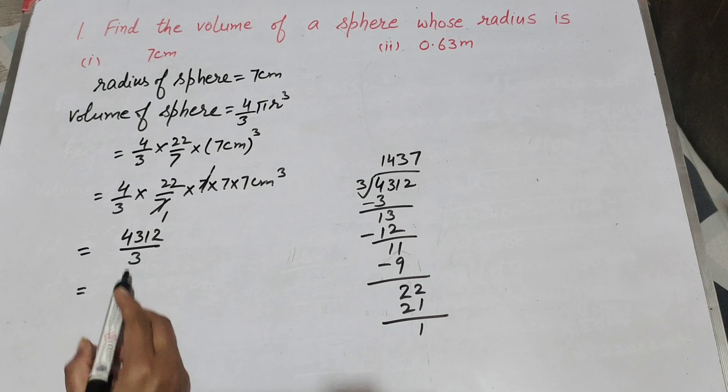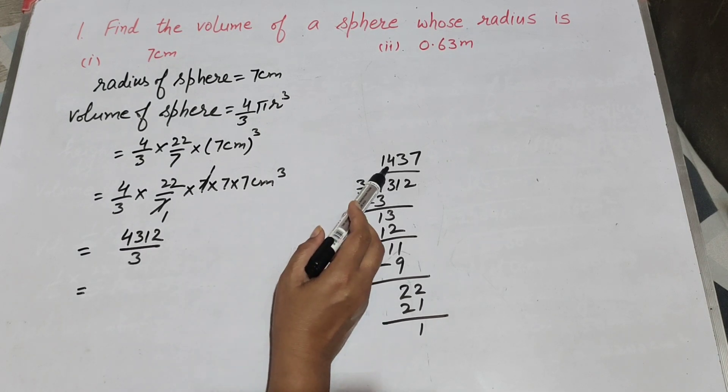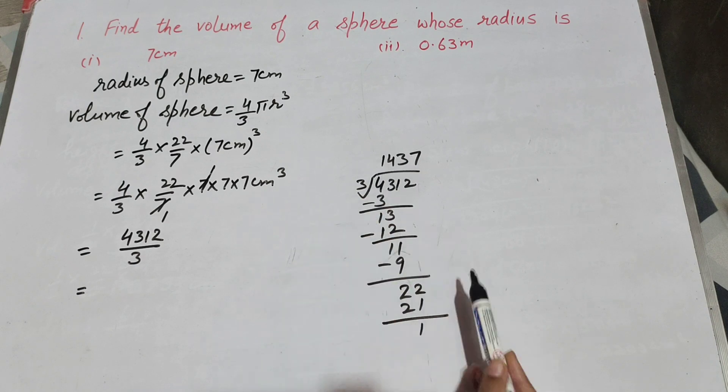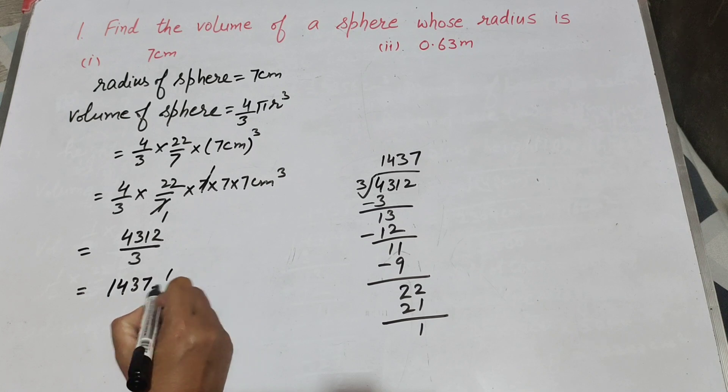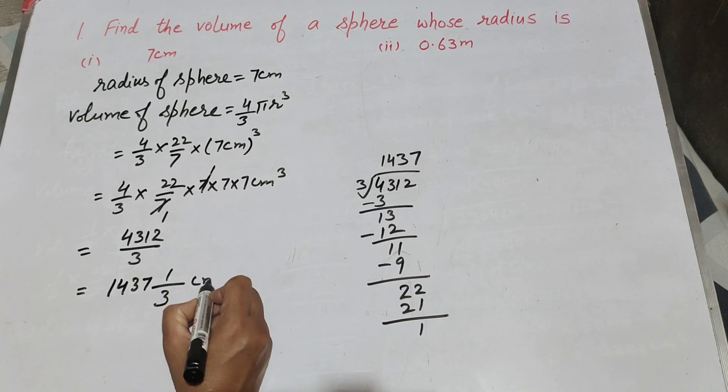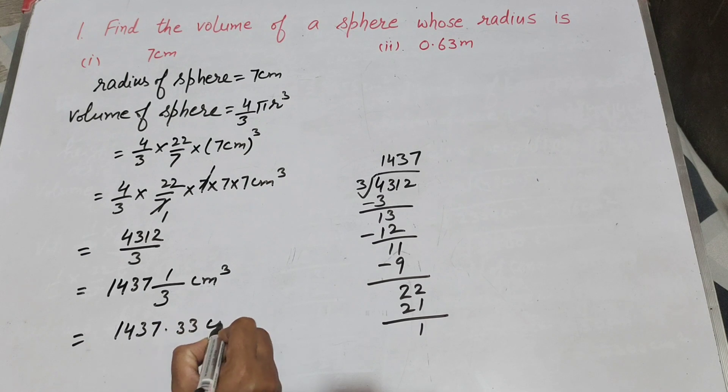Now 4312 divided by 3 by using long division method. On dividing them we get answer 1437, remainder 1, divisor 3. So it is 1437 and 1 over 3 cm cube. We also change it into decimal: it is 1437.33 cm cube. So this is the volume of sphere.